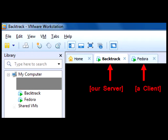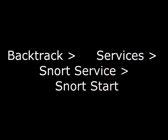In the BackTrack system, we started Snort using the menu system: BackTrack > Services > Snort Service > Snort Start. Snort was running, but we needed to make some edits to the configuration. The first thing we needed to do was put in our own IP address, since Snort's configuration doesn't know the IP address for our server.